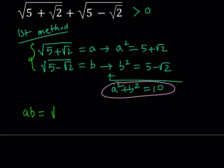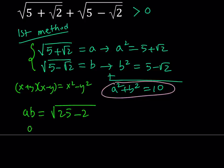If you multiply a and b, you're going to get the square root of 5 squared, which is 25, minus root 2 squared, which is 2. So, here, I'm using the difference of two squares formula, which is x plus y multiplied by x minus y equals x squared minus y squared. So, ab becomes square root of 23. That's another equation that I would like to use.